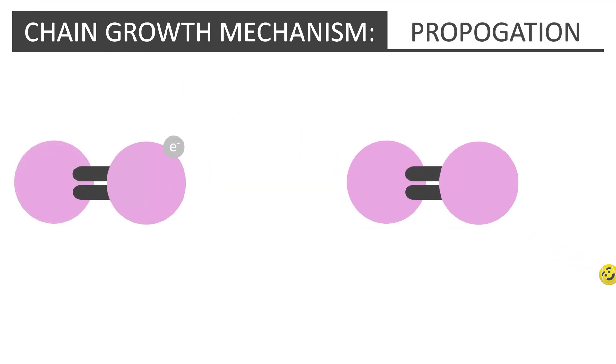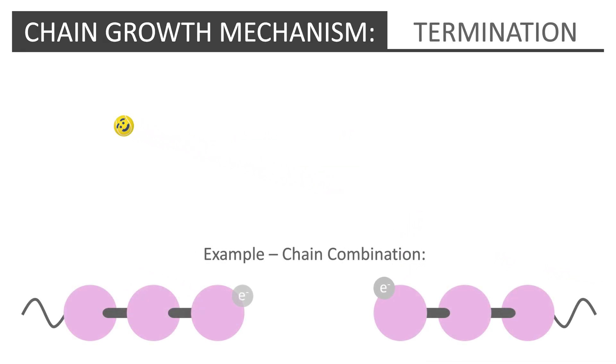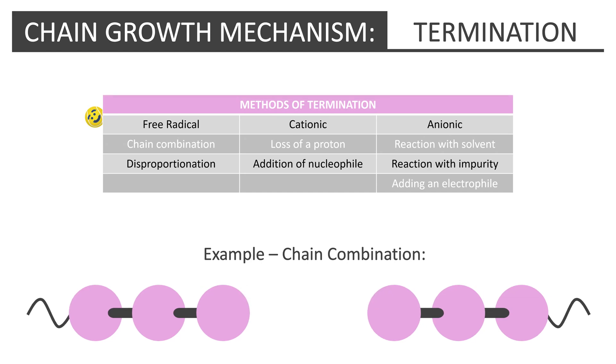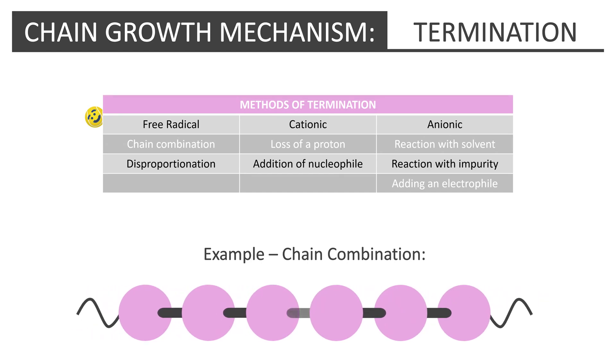This reactive species subsequently reacts with further alkene molecules, breaking the double bond, and in each case extending the polymer chain, called a propagation step. This process is repeated several times until the termination step occurs, by different possible methods, with the exception of anionic polymerization which cannot be determined without external input and is therefore described as a living polymer.